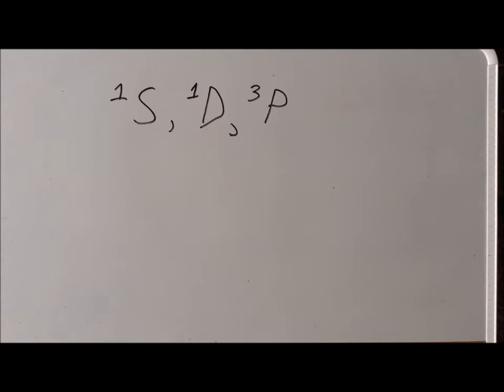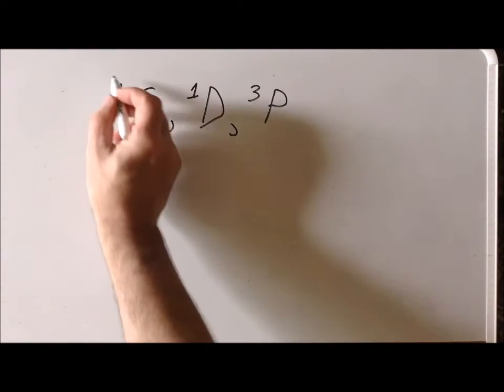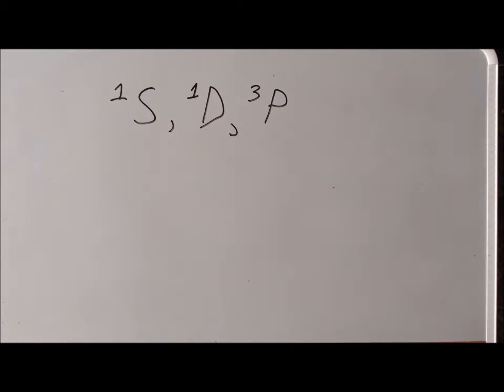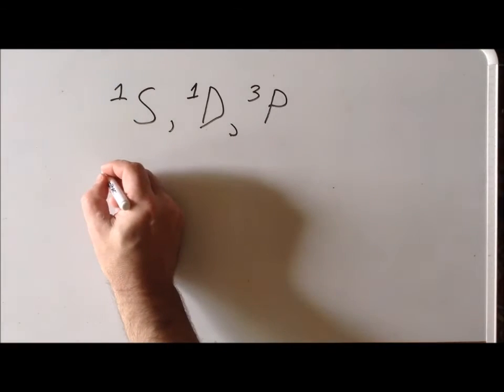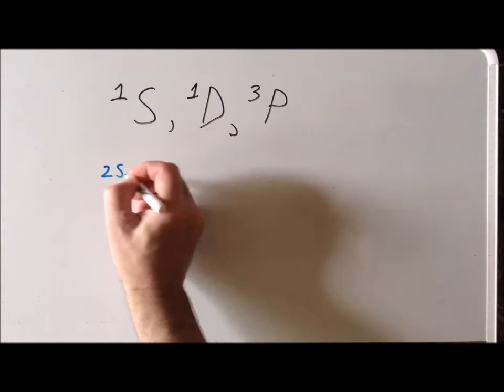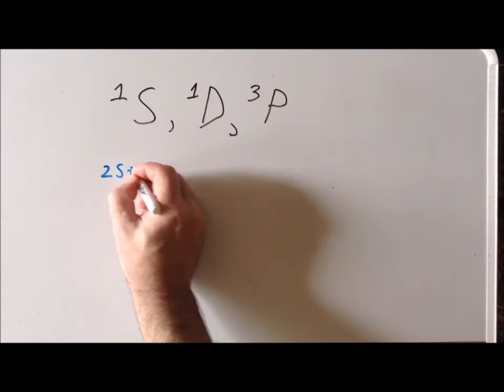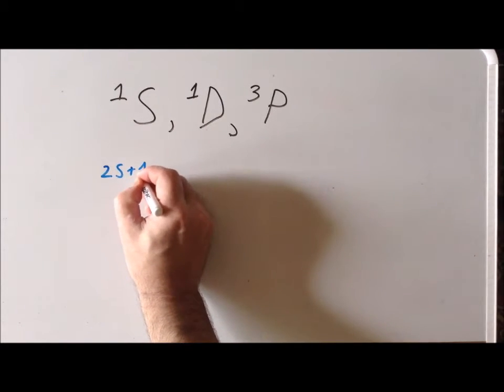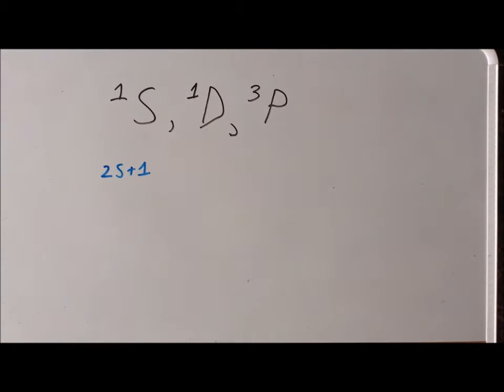One thing to notice is that encoded in the term symbol is information about both the orbital angular momentum and the spin angular momentum. We can write the term symbol in two parts. In the upper left-hand corner as a superscript, we have the spin multiplicity, which as you recall is 2S plus 1.